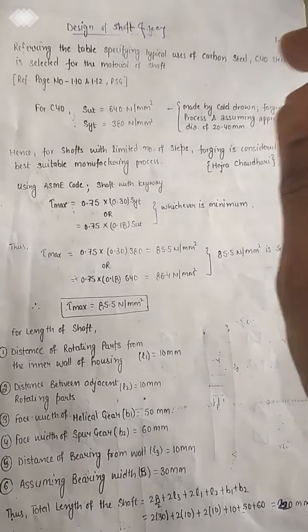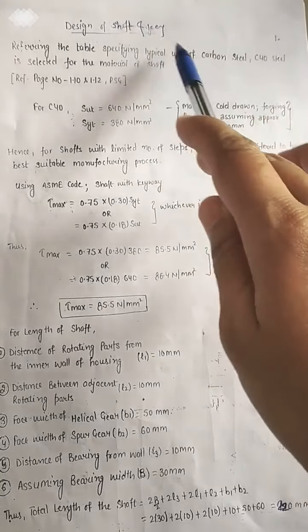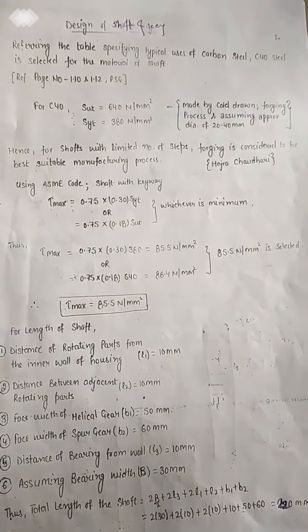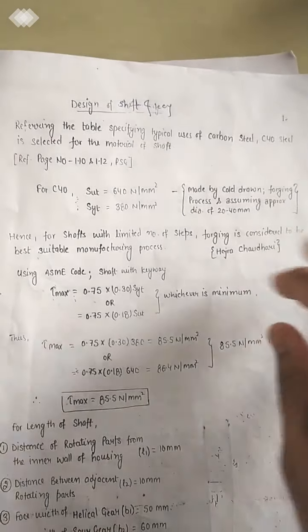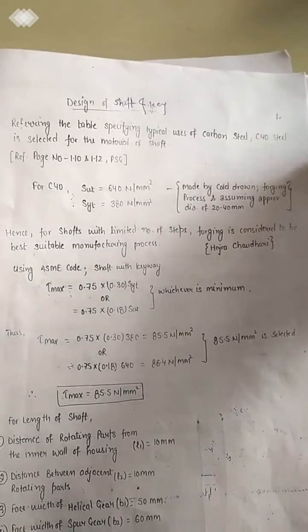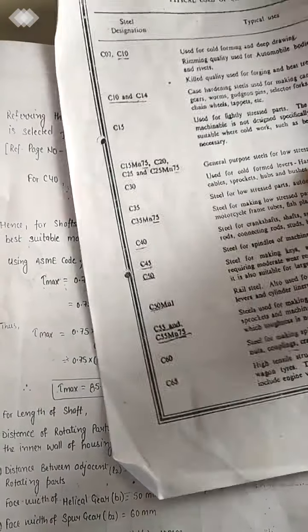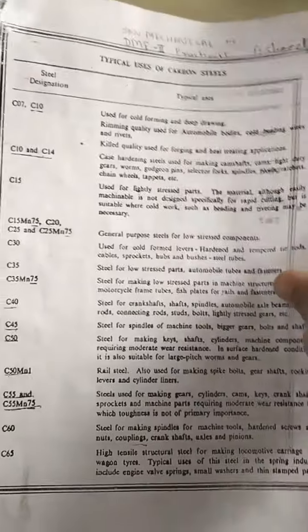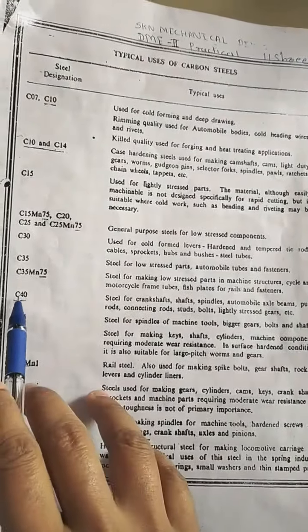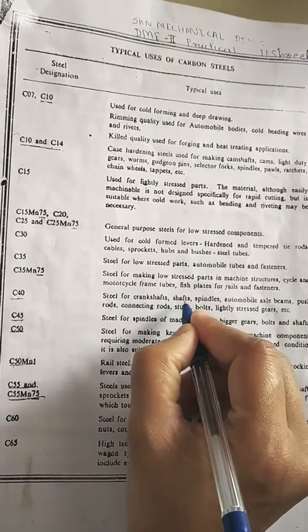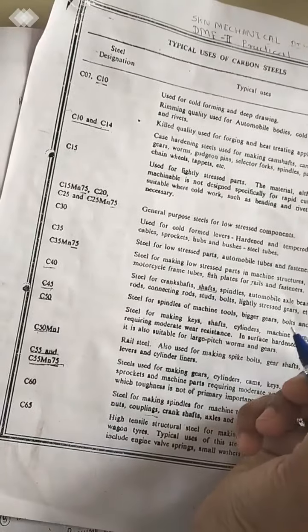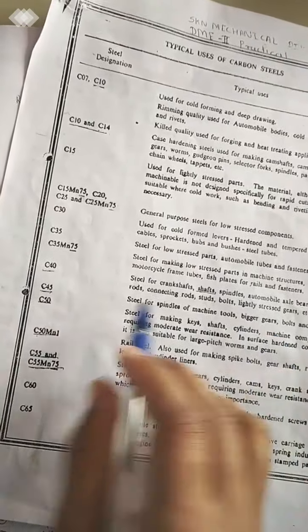Let's start to discuss the design of shaft and key for our project — that is the design of a gear box. Firstly, let's refer to a typical table of carbon steel for selection of shaft material. For C14, it is the material used to manufacture the shaft, so we'll select C14.